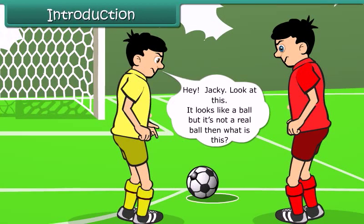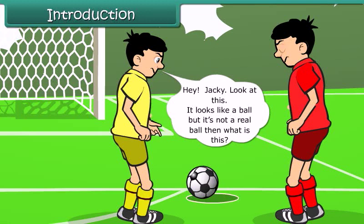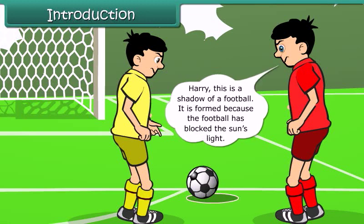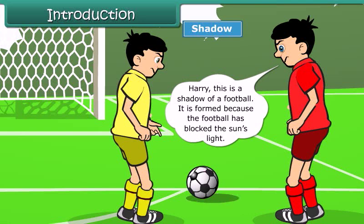Hey, Jackie, look at this. It looks like a ball, but it's not a real ball. Then what is this? Harry, this is a shadow of a football. It is formed because the football has blocked the sun's light. So now let us learn more about shadow and its formation.